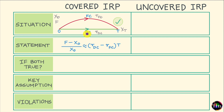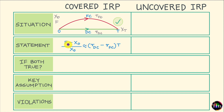Mathematically, covered interest rate parity tells us that (F − X0) / X0 is approximately equal to the interest rate differential between the two currencies times the length of the investment period in years. This means that if FC is the lower yielding currency — RFC is lower than RDC, making the right-hand side positive — then F should be greater than X0. In other words, the lower yielding currency, FC, trades at a premium in the forward market compared to the spot market.